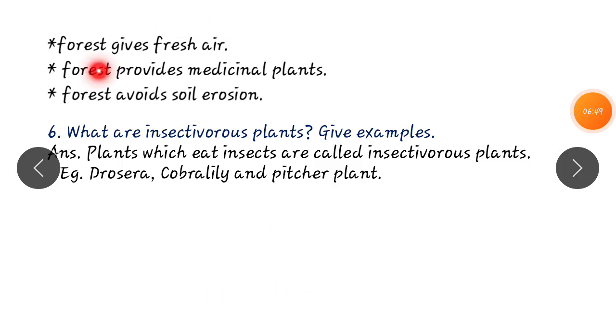Uses of forest. Then insectivorous plants and their examples. Plants which eat insects are called insectivorous plants. Examples are drosera, cobra lily and pitcher plant. Children you have to study the two lessons. First one the animal kingdom and the second lesson go around the forest. All the best children.